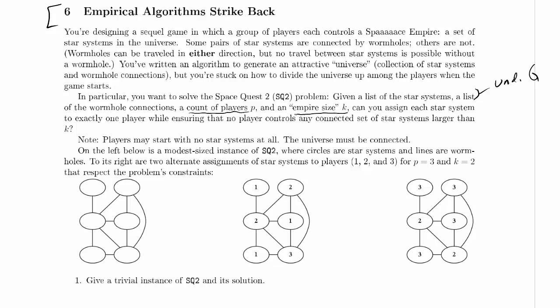Players may start with no star systems at all. The universe must be connected. So some players don't have to be assigned any star systems, or even all players could be assigned no star systems, I guess, if we had a small enough graph. Here is a modest size instance of SQ2, where circles are star systems and lines are wormholes. To its right are two alternate assignments of star systems to players for P equals 3 and K equals 2 that respect the problem's constraints.